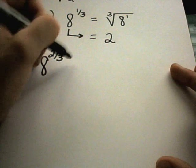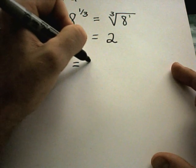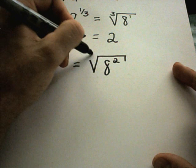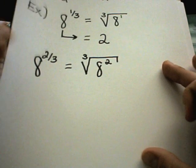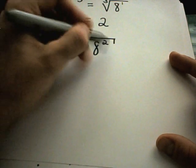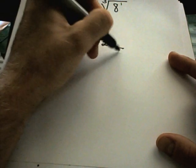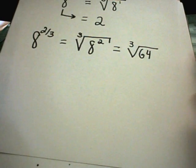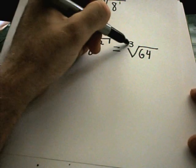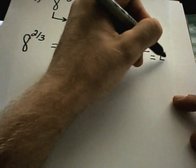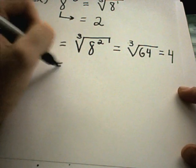Suppose I have 8 raised to the 2/3. There are two ways to do this. I could rewrite this as 8 raised to the 2nd power, cubed. You could multiply this out immediately - 8 times 8 is 64. Can you think of a number multiplied by itself 3 times that gives you 64? Turns out that 4 works.